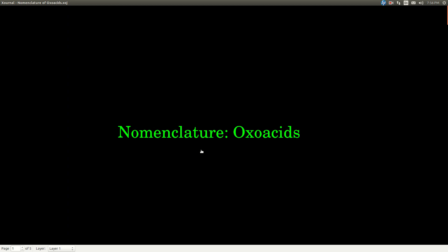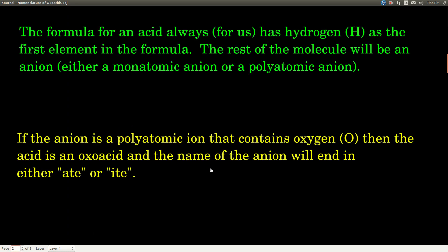In this video, we're talking about the nomenclature of what are called oxoacids. So what is an oxoacid? Well, first of all, an acid is a compound whose formula begins with the element hydrogen, H.